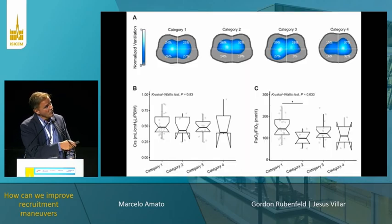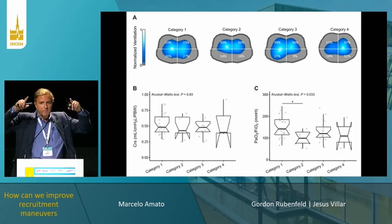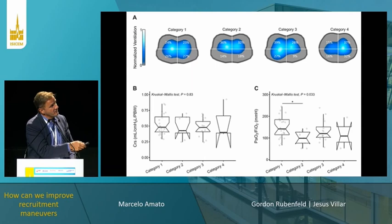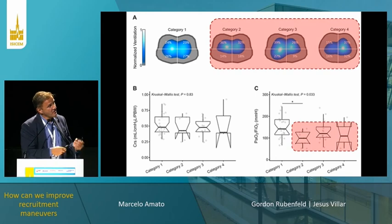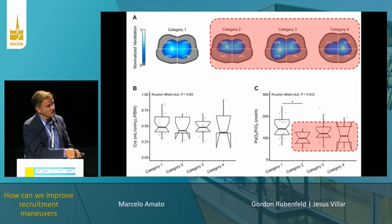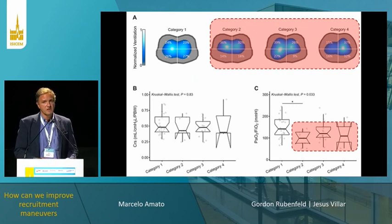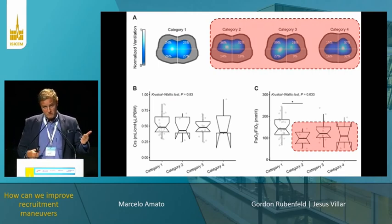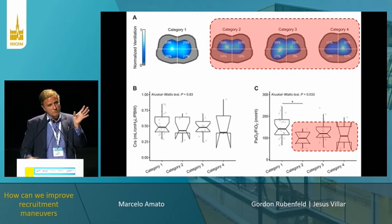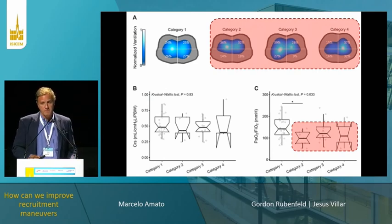We are now working with morphological characteristics of EIT patterns. Whenever any quadrant in the dorsal part is compromised, these patients are potentially good candidates for a recruiting maneuver or positional change, and they typically have worse oxygenation. The message is that we need better identification of patients to be recruited, and better technology to assess how much pressure each patient needs. Thank you.